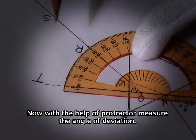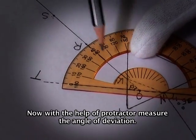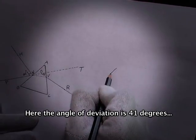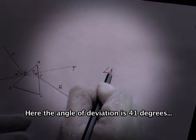With the help of protractor, measure the angle of deviation T. Here the angle of deviation is 41 degrees.